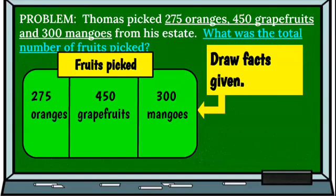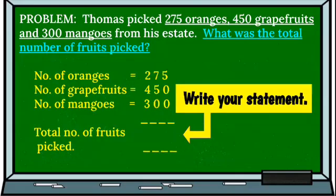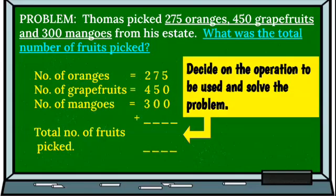Here we have our facts — fruits picked: 275 oranges, 450 grapefruits, and 300 mangoes. Using our drawn facts, let's move on to our statement. Number of oranges: 275. Number of grapefruits: 450. Number of mangoes: 300. What are we required to find? The total number of fruits picked. From the word 'total,' we can decide on the operation to be used and solve the problem.